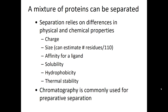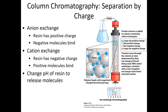We'll focus on three types of chromatography methods. The first is column chromatography separating by charge using an anion or cation exchanger. With anion exchange, the resin inside the column is positively charged. When you pour the solution in, only negatively charged proteins stick to the resin — anything positively charged just keeps flowing out.